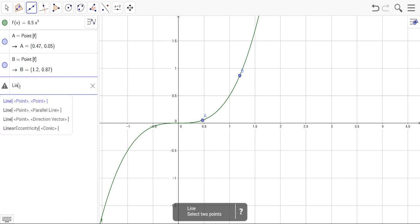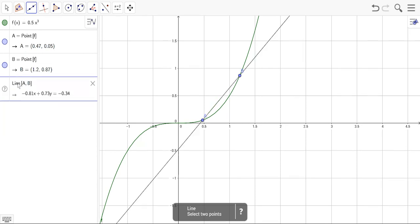Type in line. GeoGebra is going to suggest some possible commands. I just want the two points. I'll say a line between A and B. There we go, it's giving us a line.